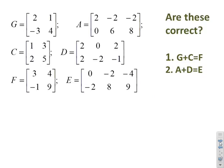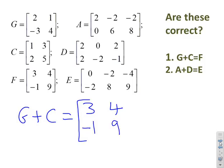Which of these identities are correct? I'll calculate G plus C and see what I get. G plus C: 2 plus 1 is 3, 1 plus 3 is 4, -3 plus 2 is -1, and 5 plus 4 is 9. Compare that to F, and I can see that is indeed equal to F. So this one is correct.